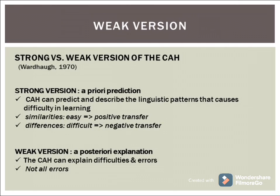Wardo 1970, in his assertion of the weak version of CAH, stressed the strong versus weak version distinction. In the strong version, it is a priori prediction — meaning CAH can predict and describe the linguistic patterns that cause difficulty in learning. Meanwhile, in the weak version, it is a posteriori explanation — meaning CAH can explain difficulties and errors, but not all errors.